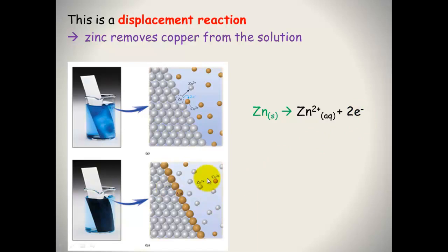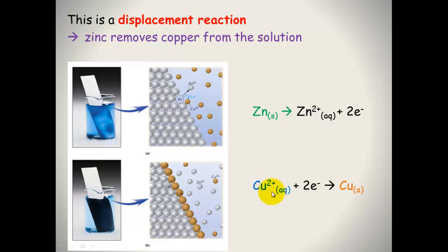What's happening is the copper is hooking up with those two electrons and becoming copper solid. So we've got Cu²⁺ ions from the copper sulphate plus two electrons forming copper solid on the outside. That's a reduction reaction.